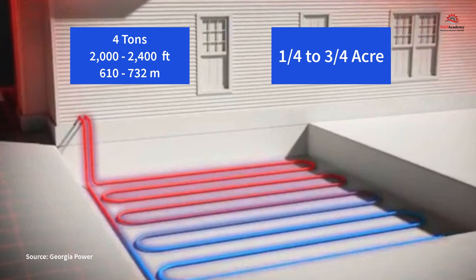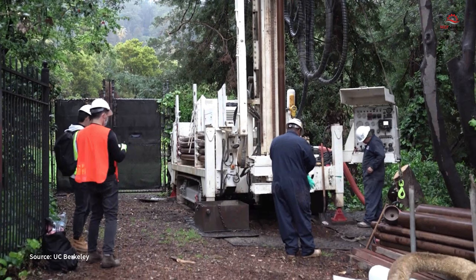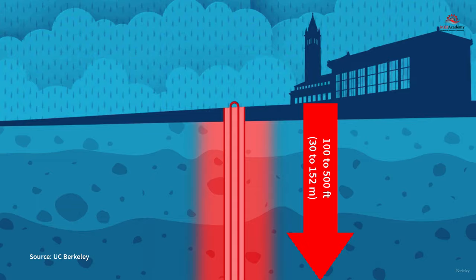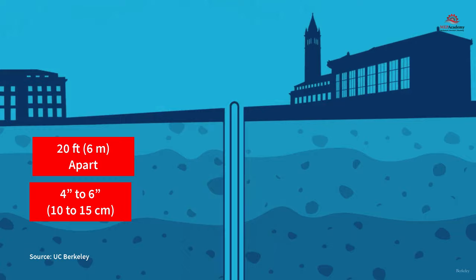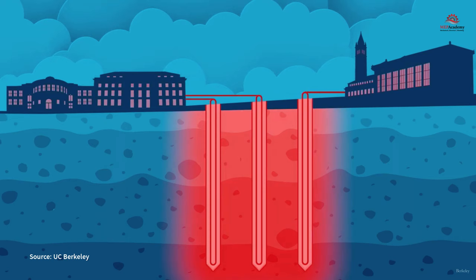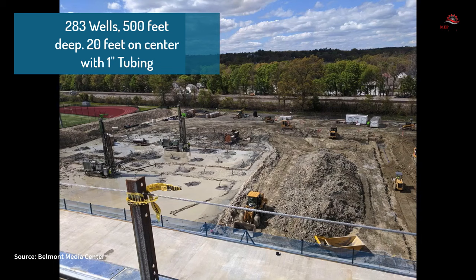Vertical Loop Ground Source Heat Pumps: Using vertical loops requires less land area as the tubing is sent hundreds of feet below the surface. For commercial buildings, this could include boreholes 100 to 500 feet (30 to 152 meters) deep, spaced 20 feet (6 meters) apart to allow for proper heat transfer. These holes can be up to 4 to 6 inches (10 to 15 cm) in diameter and contain plastic tubing that traverses to the bottom where it makes a U-turn and comes back out, connecting to a horizontal manifold. Residential systems would require fewer bores and would most likely be 300 feet (91 meters) deep or less. Vertical loops can be used when there isn't enough land area and when greater efficiencies may be required.